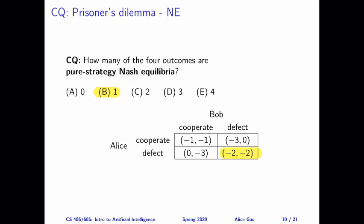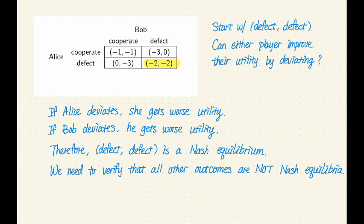So let's look at how we can derive this answer. This game is fairly small. There are only four outcomes. So one brute force way of answering this question is that we can go through all four outcomes and verify whether each outcome is a Nash equilibrium or not.